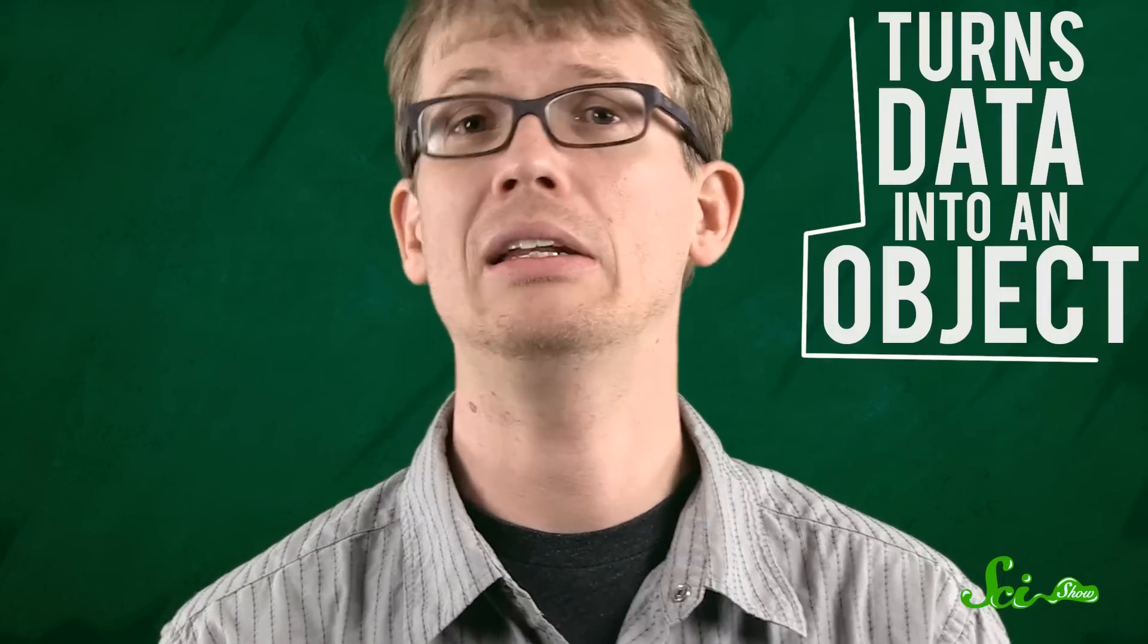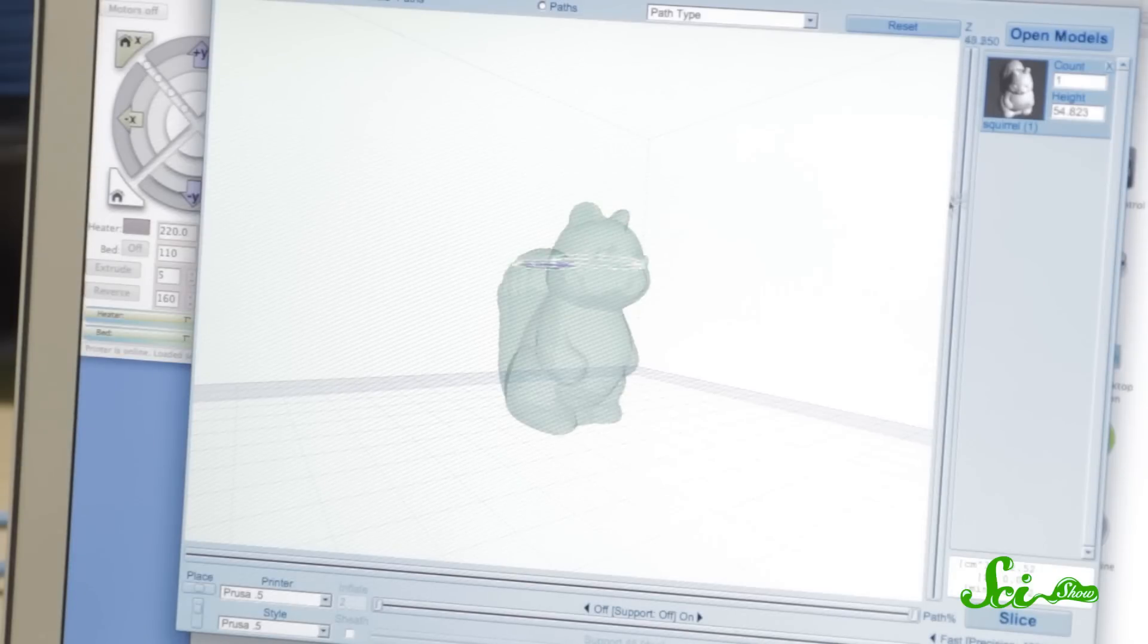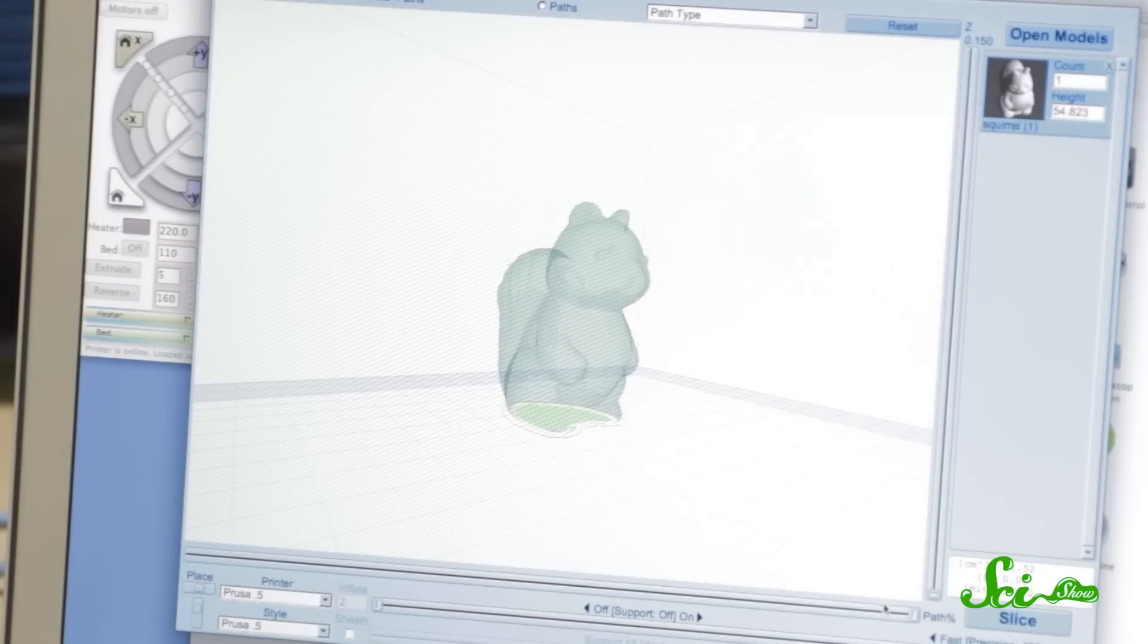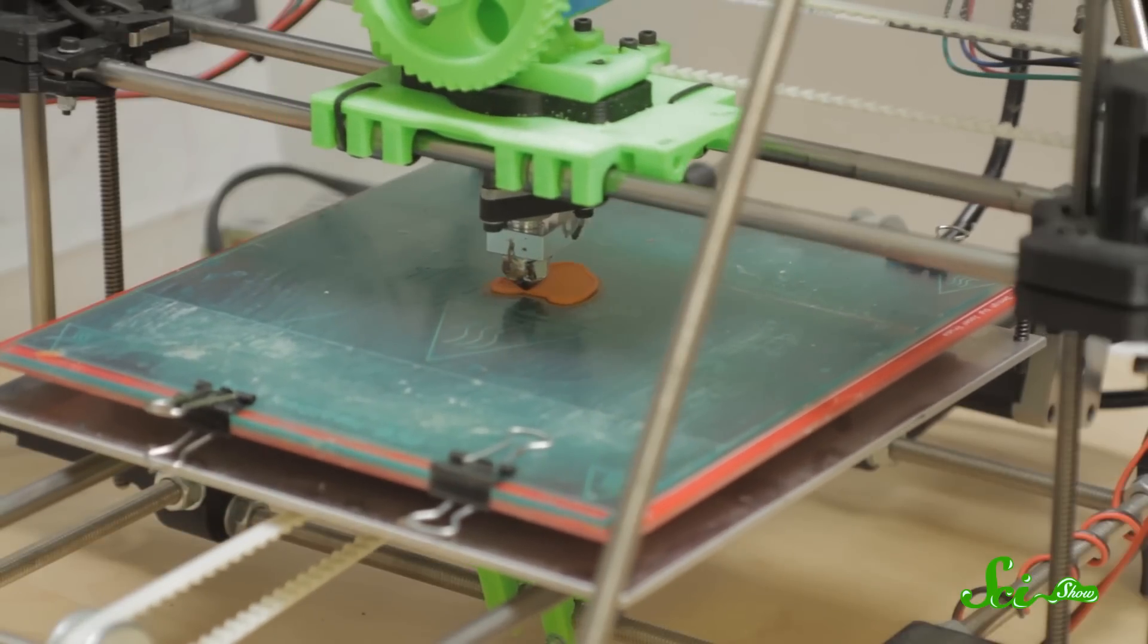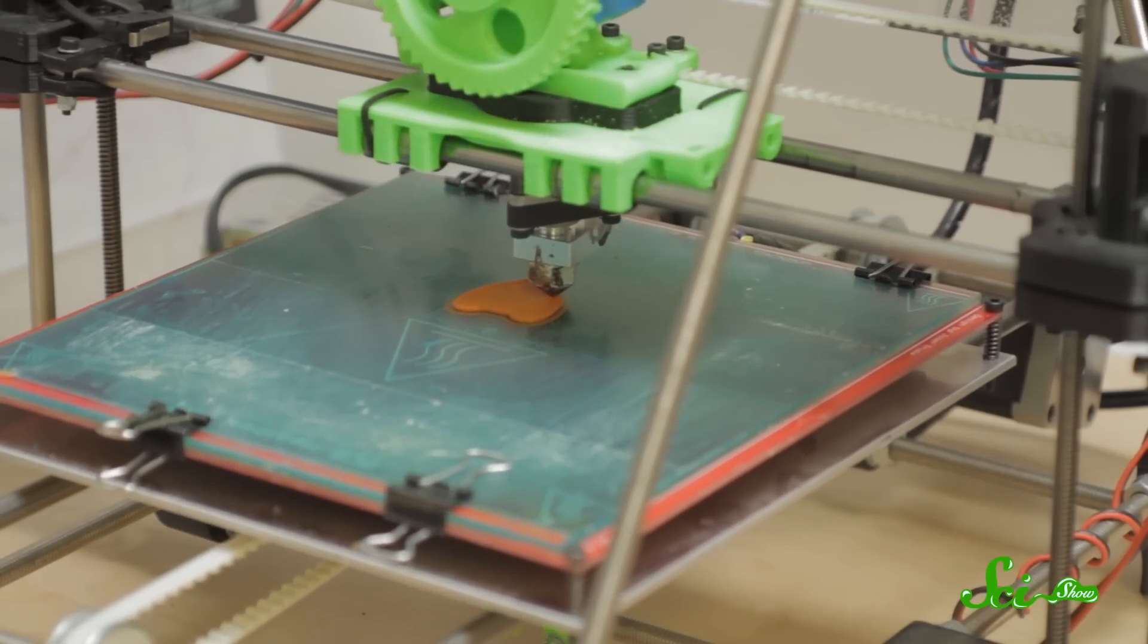It's like making a spear to kill a woolly mammoth by laying down one layer of wood and stone and rabbit guts at a time. Basically, a 3D printer turns data into an object. It uses software like you'd find in a normal paper printer, only instead of creating a two-dimensional image, it's three, and instead of laying down layers of ink, it squirts out whatever material you want.